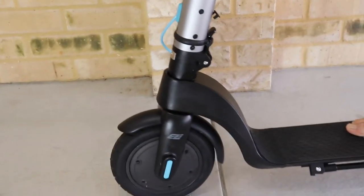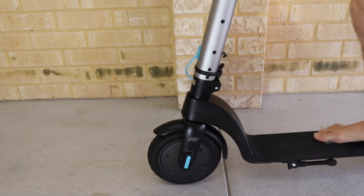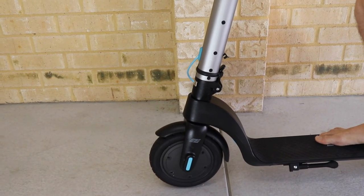So there we have it. Just by putting a thin layer of silicon in there, we're able to get rid of the creak, or most of the creak, from when the scooter body meets the handle. Thanks for watching.